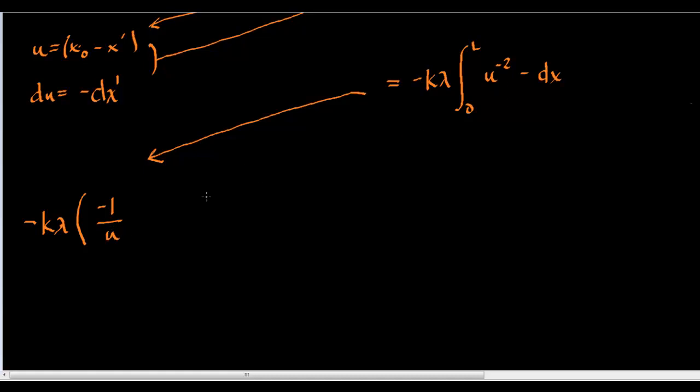And, the reason for that is, well, just test it. If we had, if we were to take the derivative of u to the negative 1, we'd bring the negative 1 in front, which would make it negative u to the negative 2. And, we want u to the negative 2. So, if we make this negative to begin with, then everything works out. So, we get 1 over u evaluated from 0 to l.